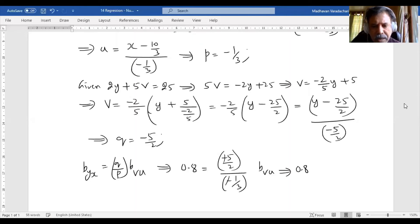So we will have 0.8 is equal to 5 by 2 multiplied by 1 by 3 times b_vu, which means our b_vu